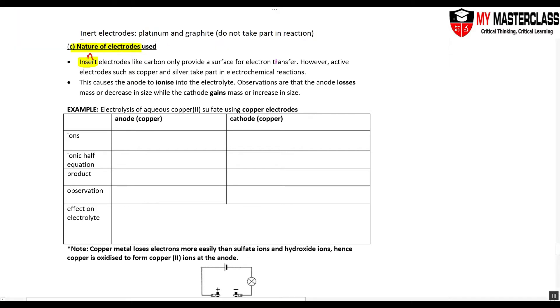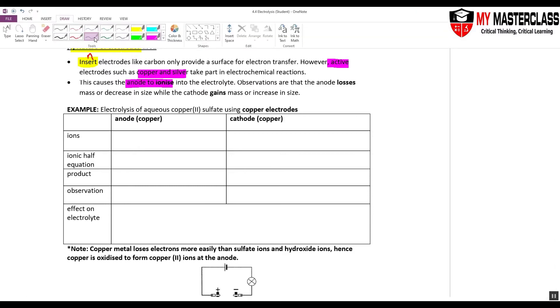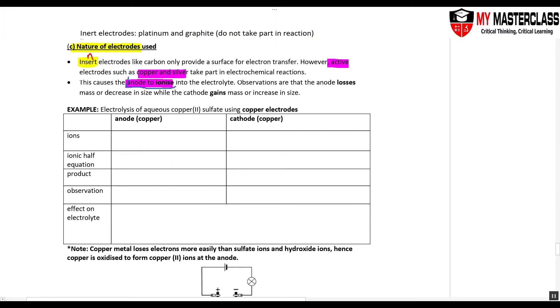However, active electrodes - what are some examples of active electrodes? These are copper and silver. Any metals other than platinum are considered active. So please remember copper, silver, even though they are low in the metal reactivity series, they are considered active electrode when you pass electricity through it. So when I have an active electrode, the anode will ionize. Ultimate, most important thing. Anode will ionize. Please remember this.